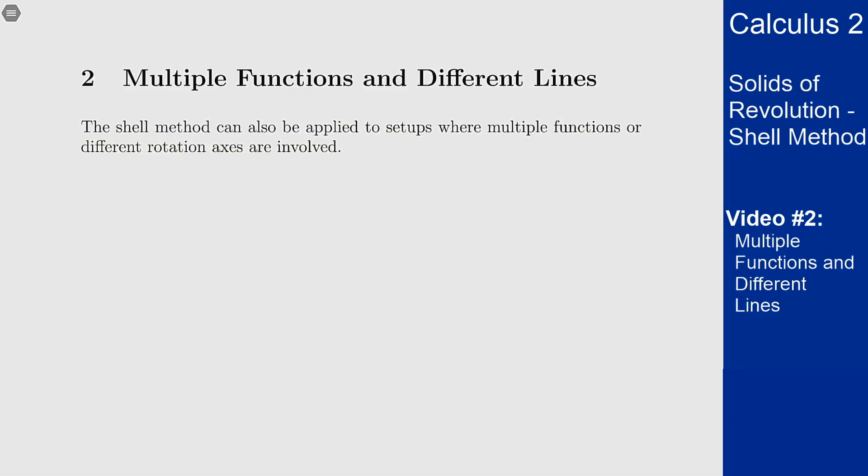In this video we'll talk about using the shell method to find volumes of revolution when you have multiple functions and different axes involved. The procedure for doing this is the same as it was in the previous case, mixing in the multiple functions methods we dealt with when doing the washer method.